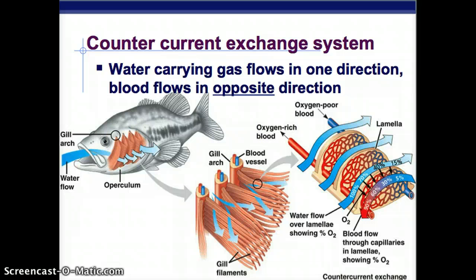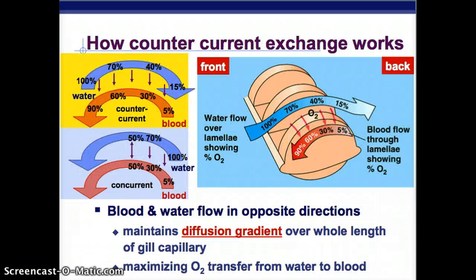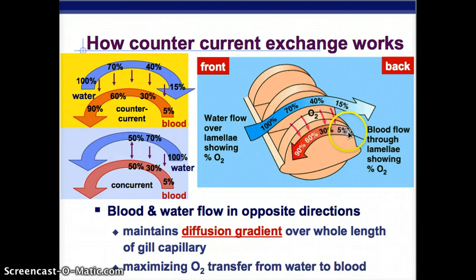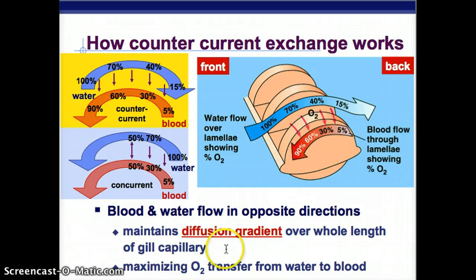You can see the gradient: 100% to 15, 5 to 90 - they flow in opposite directions. What this does is maintain a diffusion gradient over the whole length, so transfer doesn't just happen at one point and stop; it continues the whole time, maximizing oxygen transfer.